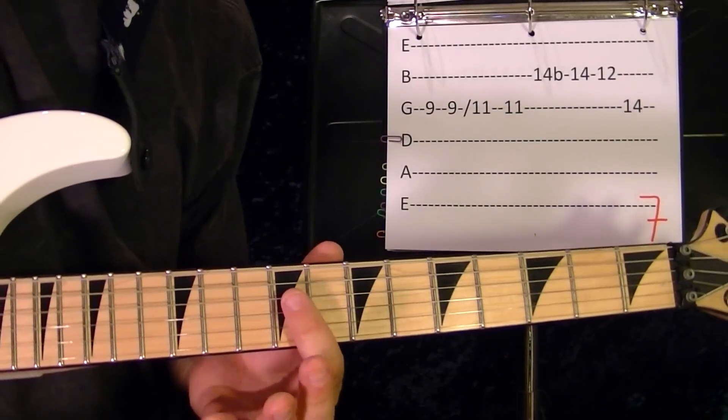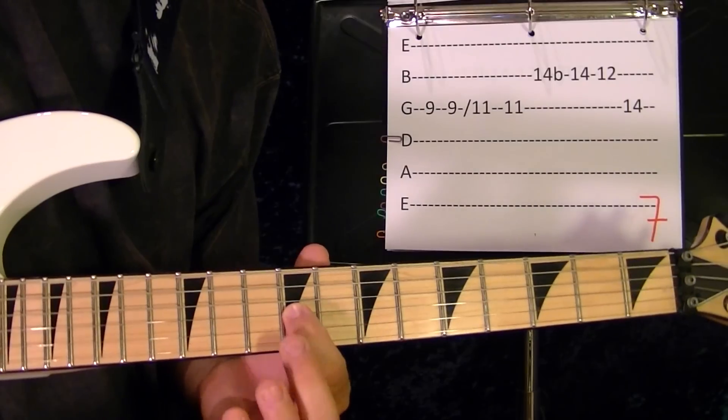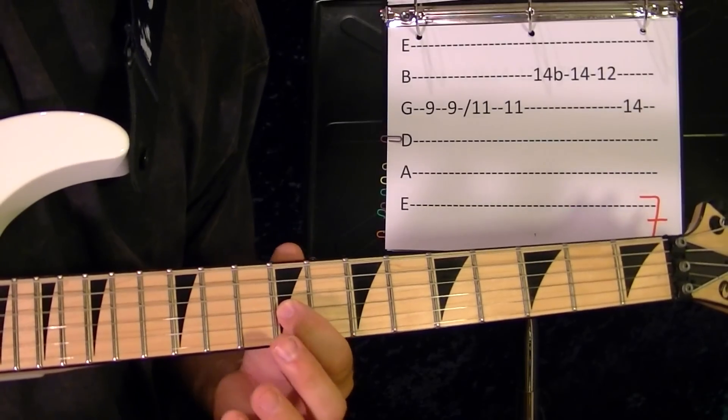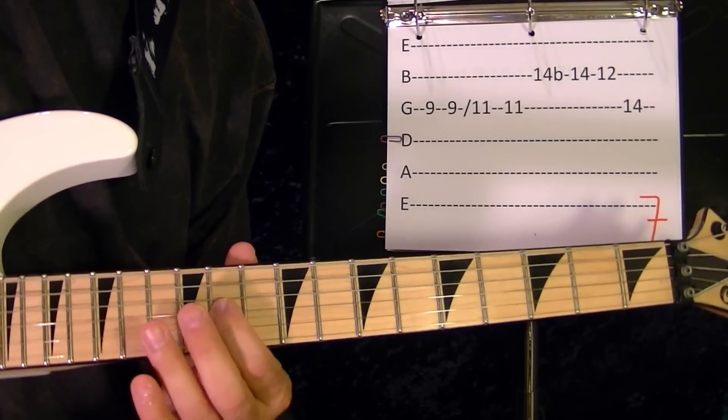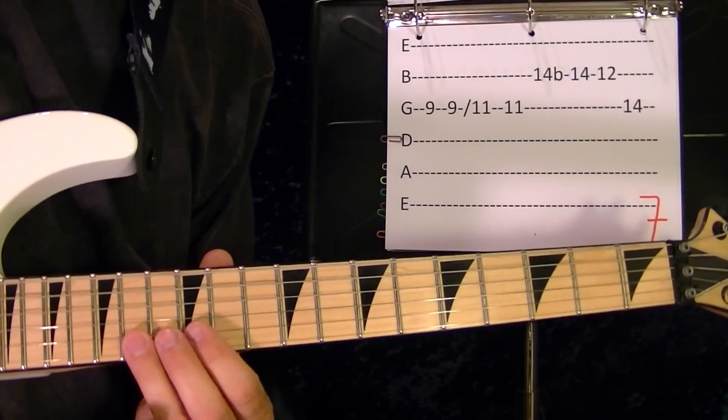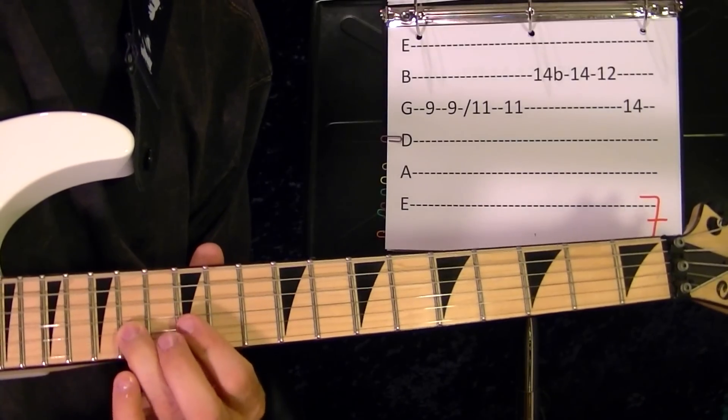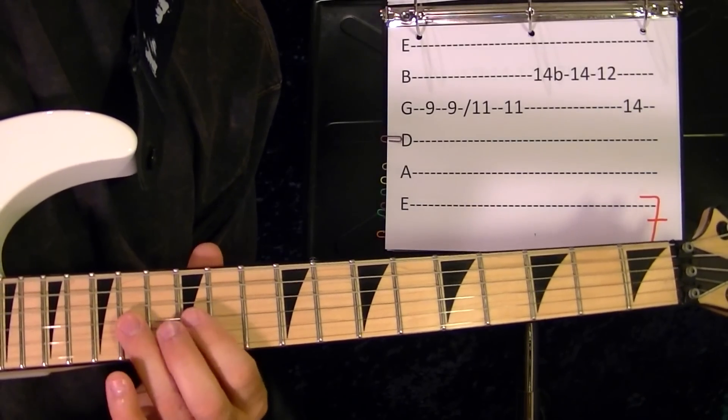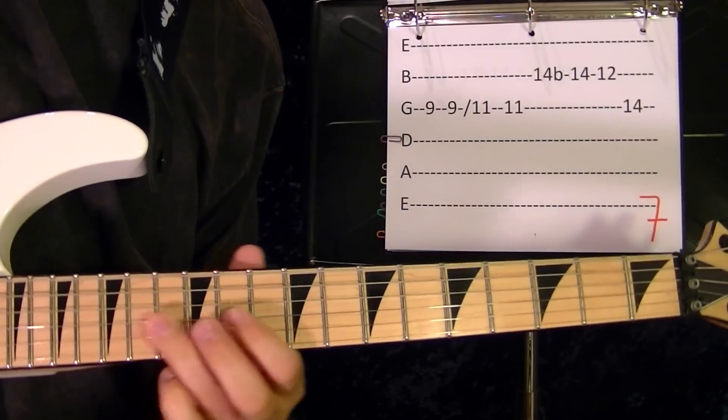So riff number seven: third string ninth fret, ninth fret again slide up to the eleventh, play the eleventh again, the second string fourteenth fret bend up, twelve, third string fourteenth, third string fourteenth fret again.